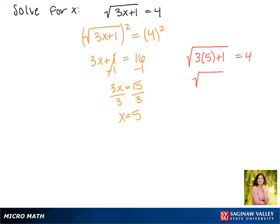First, we'll do 3 times 5, which is 15. 15 plus 1 is 16, so now we have the square root of 16 equals 4. And this is true, 4 equals 4, so x equals 5 is the solution.